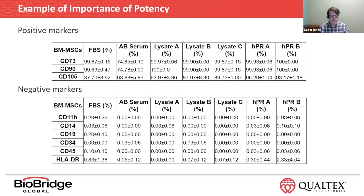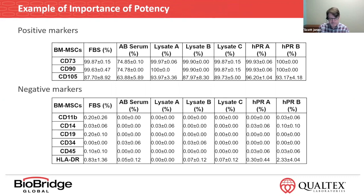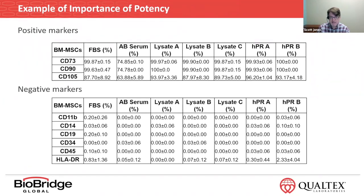So why is potency important, and why are the FDA and other regulatory agencies harping on it so much? This is basically showing the positive and negative CD markers determined by flow cytometry on mesenchymal stromal cells, or MSCs. These cells were all started from the same stock but were expanded using different culture supplements — fetal bovine serum, AB serum, and different lysate products. These are the recommended characterization markers by ISCT.